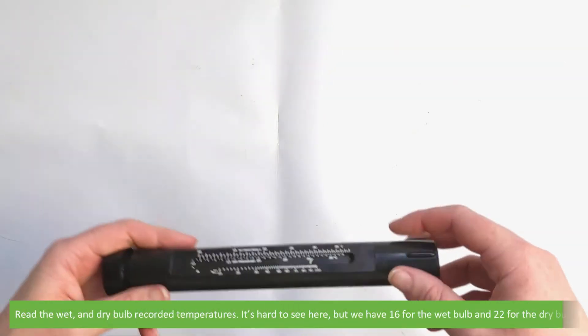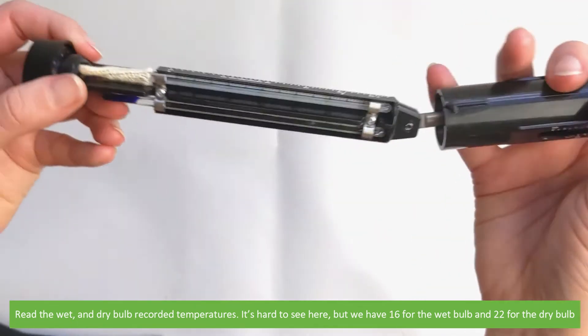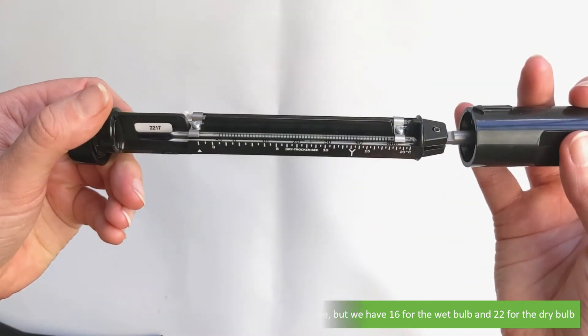Then read the wet and dry bulb recorded temperatures. It's a bit hard to see here, but we have 16 for the wet bulb and 22 for the dry bulb.